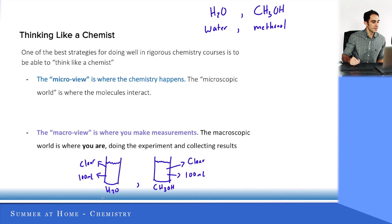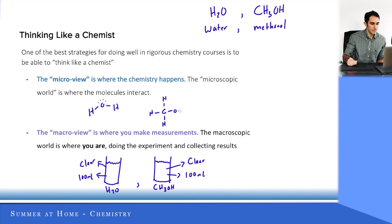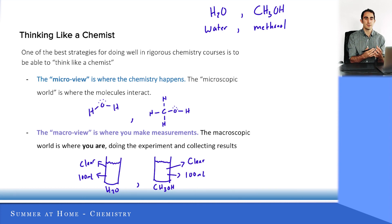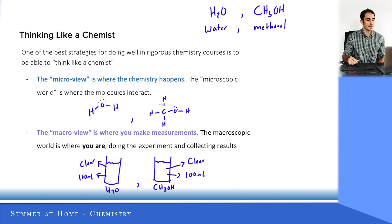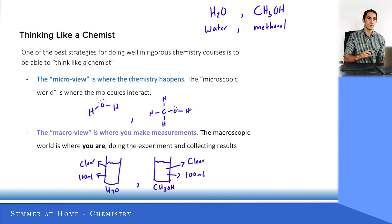A good chemist can actually zoom into either of these beakers and see that the water has a bunch of particles that look like H₂O molecules, and then the methanol has a bunch of particles that look like CH₃OH molecules. In this course we're going to learn how to draw pictures like this. In all of introductory chemistry, the objective is to come up with explanations for why methanol boiled before water, and those explanations all stem from the interactions at this micro view. It's important to be able to draw pictures or visualize both perspectives.